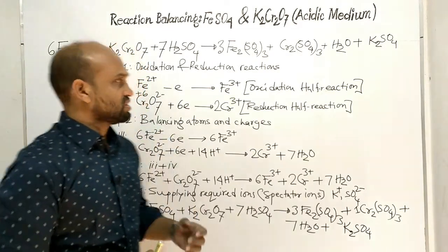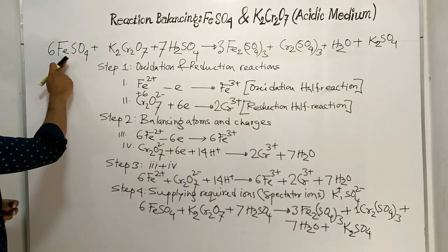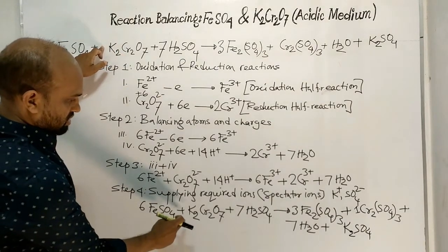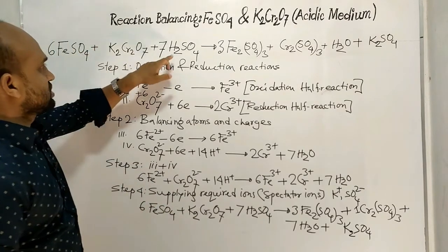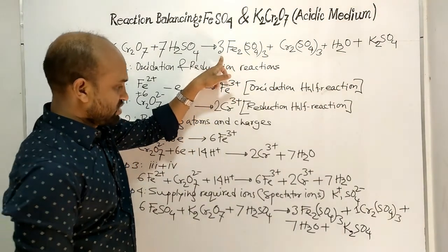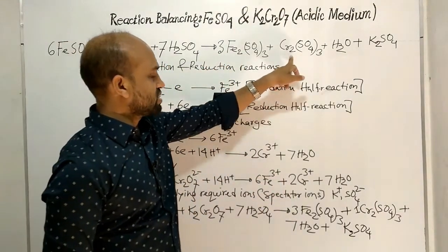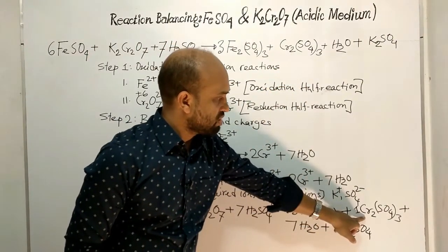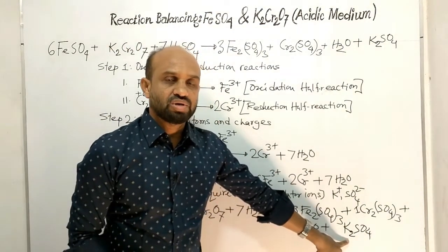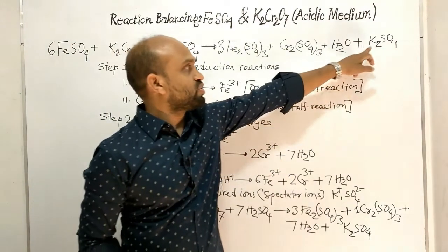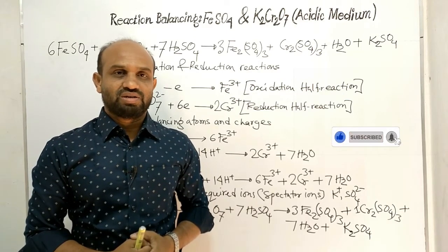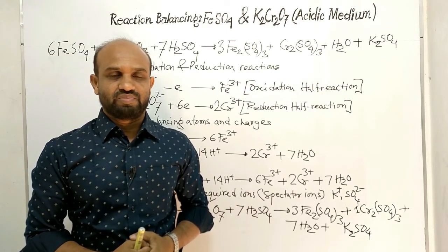The final coefficients are: 6 FeSO₄ + 1 K₂Cr₂O₇ + 7 H₂SO₄ → 3 Fe₂(SO₄)₃ + 1 Cr₂(SO₄)₃ + 7 H₂O + K₂SO₄. This is all about reaction balancing through oxidation and reduction reactions in acidic medium. Thank you very much.